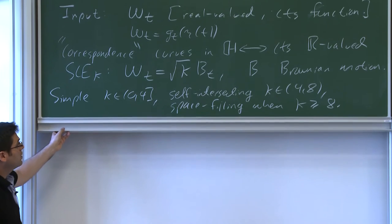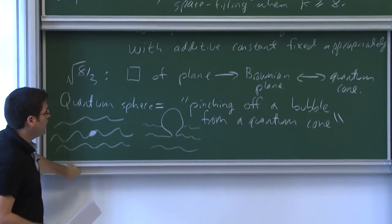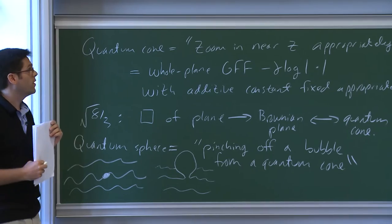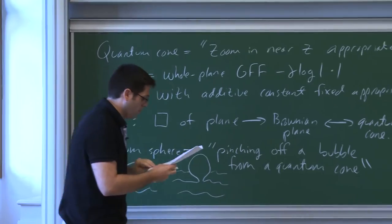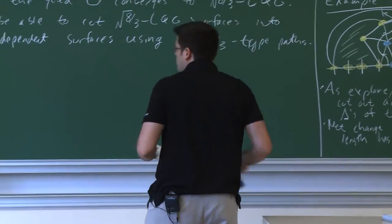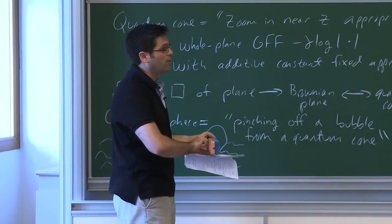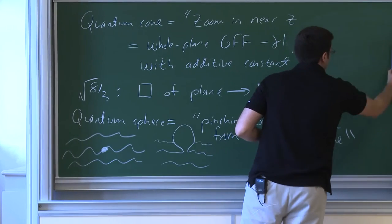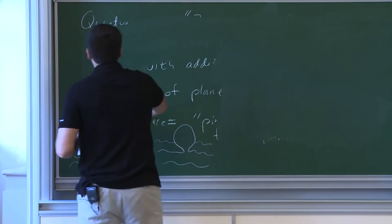To actually prove the statements about relating SLE and Liouville quantum gravity, we're going to need to know the definition — it follows directly from the definition of SLE in terms of the Loewner equation. The importance of SLE is that it was developed to describe scaling limits of statistical physics models like the self-avoiding walk and percolation.